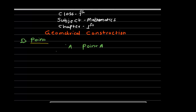Here is another example — another tiny dot. It is named T. It is read as point A. Capital letters of the English alphabet are used to name points.